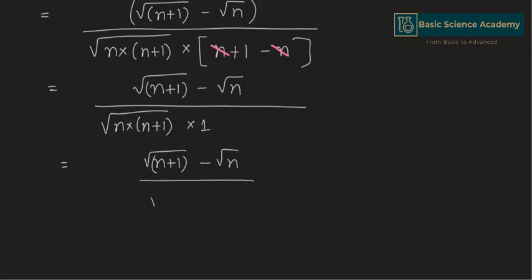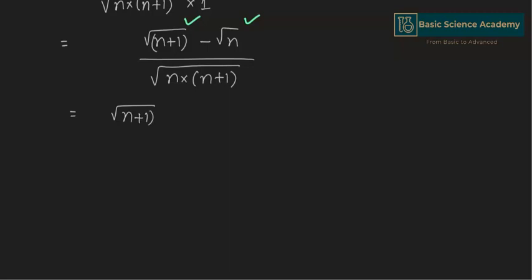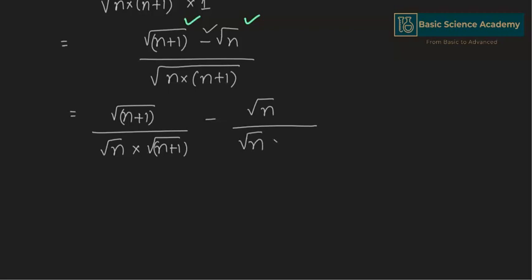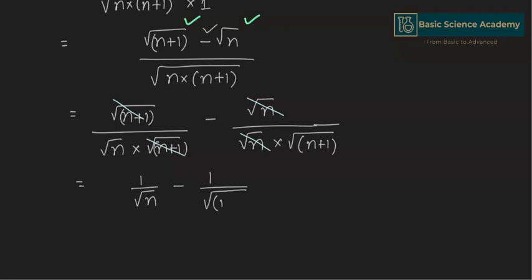Separating the two terms gives us square root of n plus 1 divided by square root n multiplied by n plus 1, minus square root n divided by square root n multiplied by square root of n plus 1. Square root of n plus 1 cancels in the first term, and square root n cancels in the second term. This gives us 1 divided by square root n minus 1 divided by square root of n plus 1.